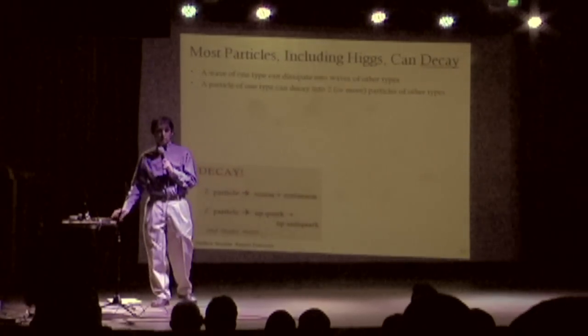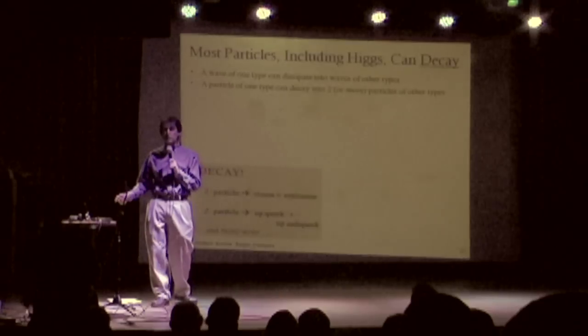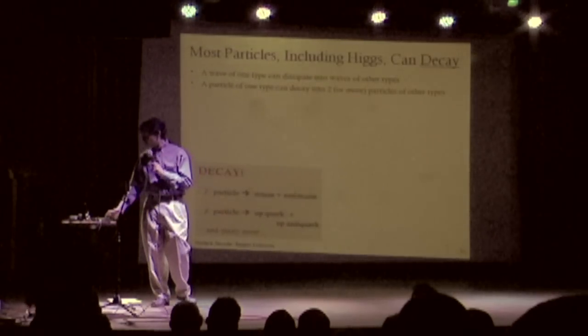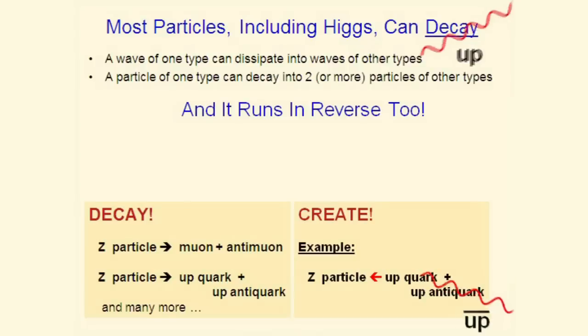Now, what's cool, though, is that you can take one of these processes and turn it around. So we could take an upquark, an anti-upquark, and run it in reverse and create a Z particle through their collision.